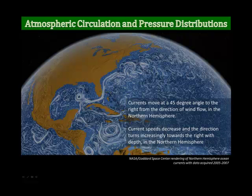Currents move at a 45-degree angle to the right from the direction of wind flow. So pretend you're facing due west — you've got the wind to your back, blowing to the west. The current is going to be moving at a 45-degree angle to the right from the direction you're facing. Current speeds decrease and the direction turns increasingly to the right with depth in the northern hemisphere. So the further and deeper it gets, the more it curves to the right.